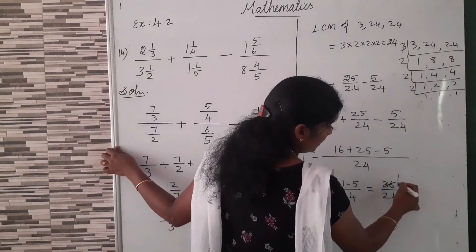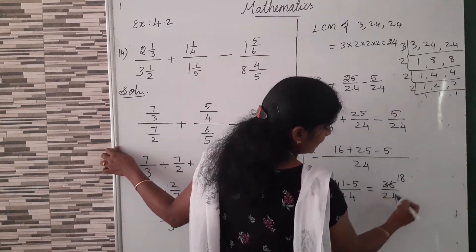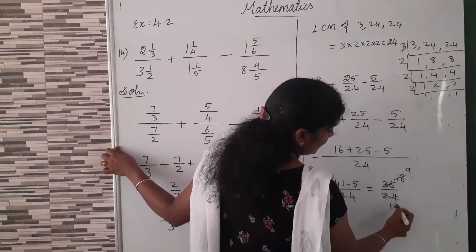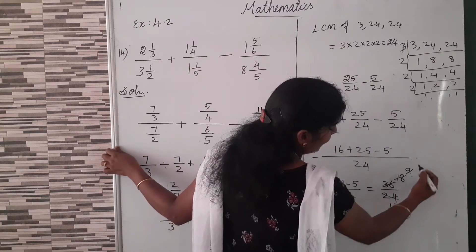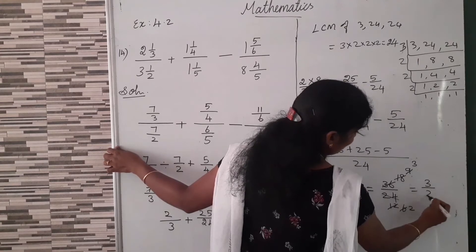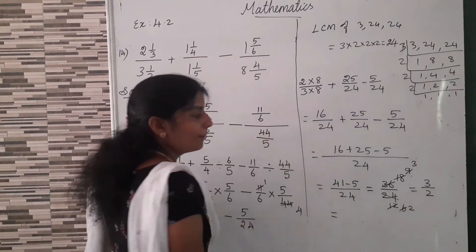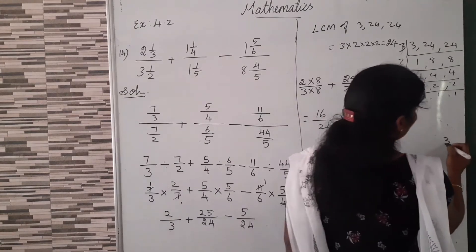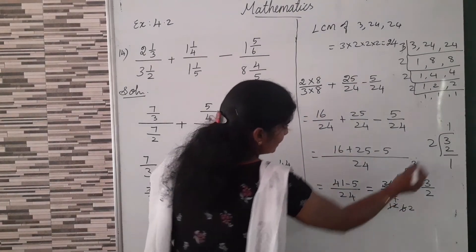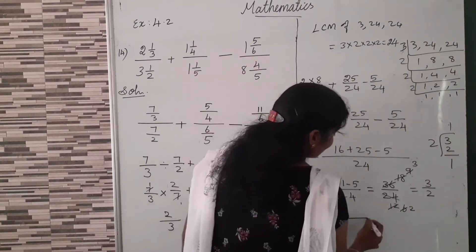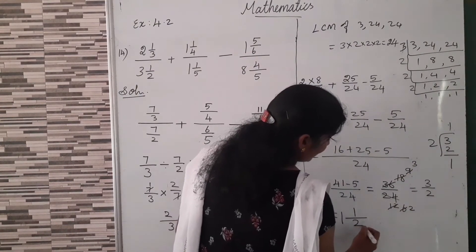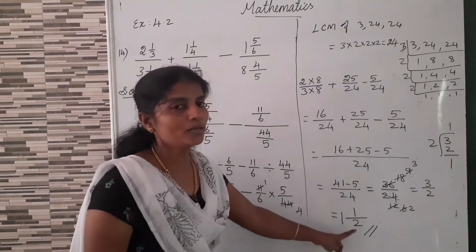Now 36/24 — we can simplify using 2 and 3 tables. Using the 3 table, we get 3/2. Now we can convert into a mixed fraction. 3 divided by 2: 1 two is 2, balance 1. So the quotient is 1, the remainder is the numerator 1, and the divisor 2 is the denominator. So the answer is 1 and 1/2.